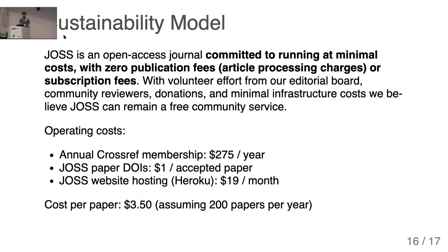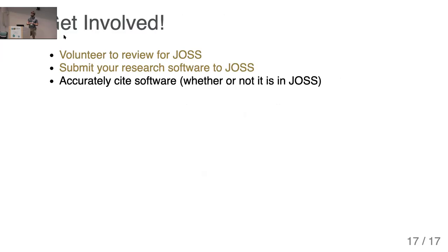JOSS is completely free to authors and to readers, and we're really committed to keeping our costs low so that nobody needs to be charged for any part of this process. We get some contributions through NumFocus, but our total costs are on the order of three or four dollars per paper at our current rate of publication. This is something we can sustain off of donations. To get involved: volunteer to review for JOSS, submit your research software to JOSS, and be sure to accurately cite software whether or not it's in JOSS.